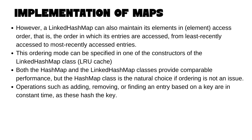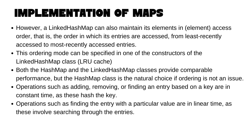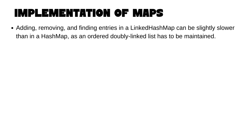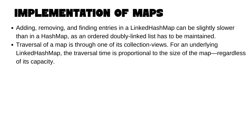Operations such as adding, removing, and finding an entry based on key are in constant time, as these hash the key. Finding an entry with a particular value is in linear time because you actually have to search through all the entries. In a LinkedHashMap, adding and removing can be slightly slower because there is a linked list maintained. The traversal time for a LinkedHashMap is proportional to the current size of the map, whereas for a HashMap it is proportional to the capacity.